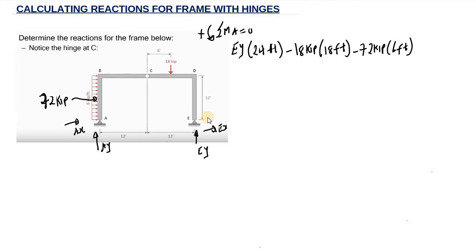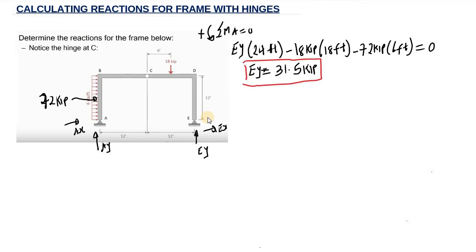Because we don't have any additional forces, this is equal to 0. Solving for EY, we get EY equal to 31.5 kip. Because we have a positive value, our assumption is right — this is indeed acting upward.